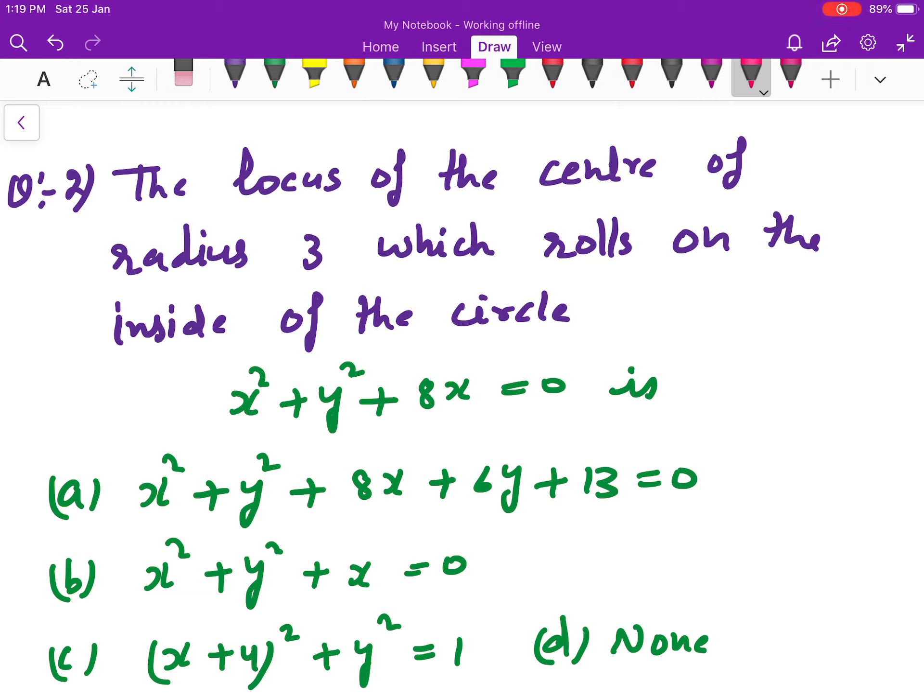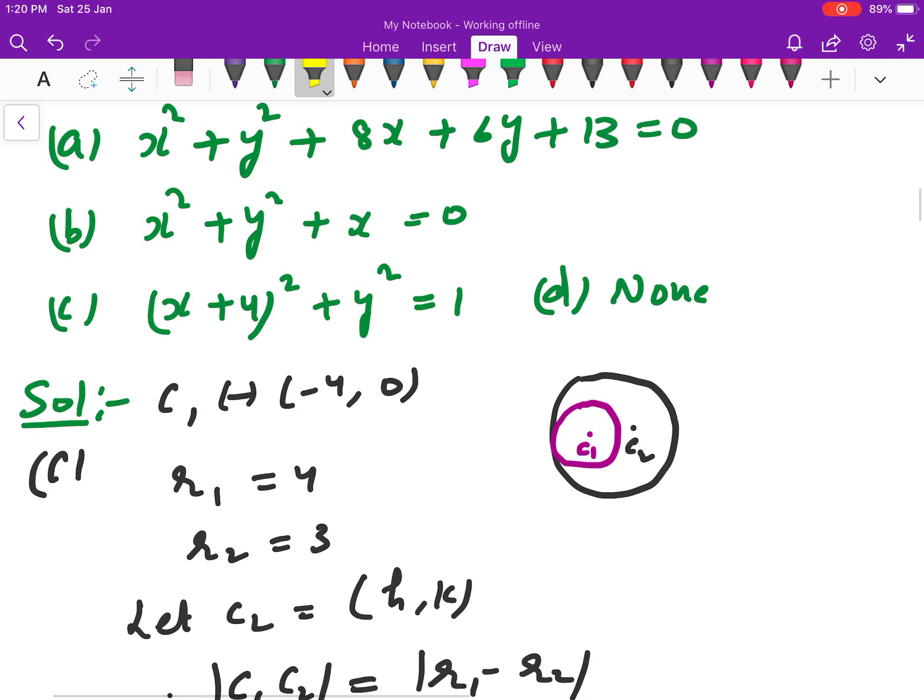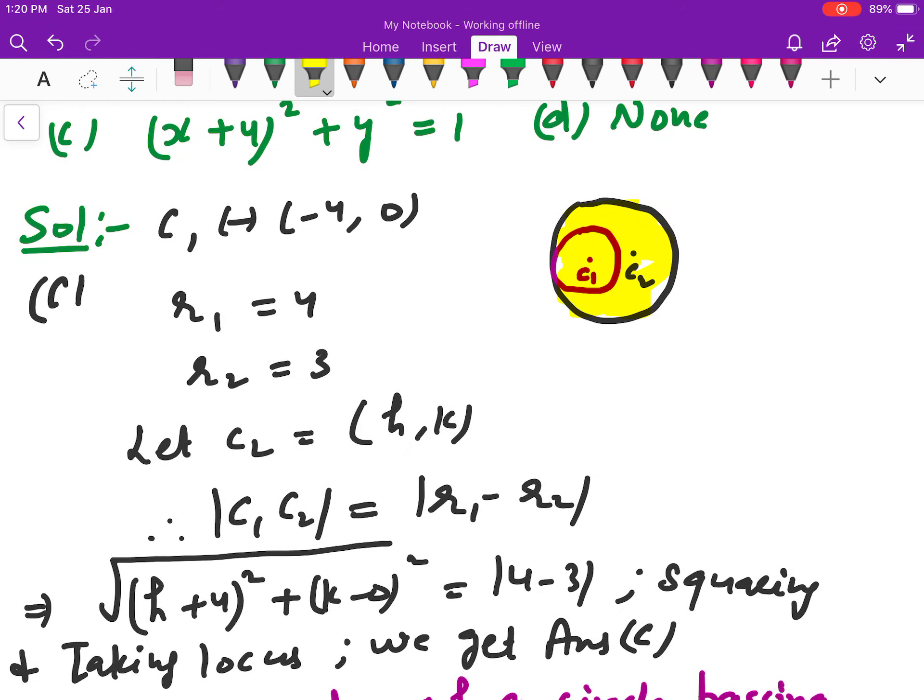Second MCQ: the locus of the center of radius 3, which is the center of radius 3 that rolls on the inside of the circle.